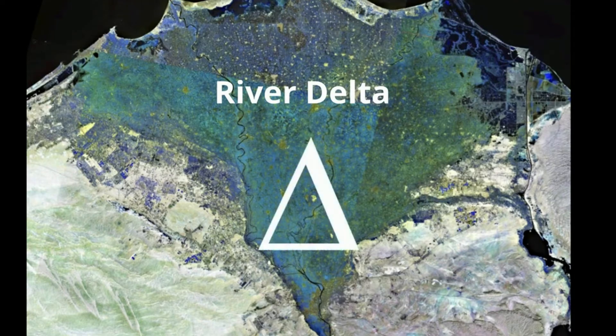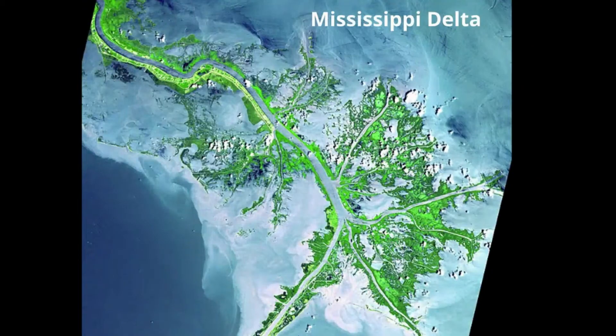However, not all deltas are triangle shaped. A bird foot delta has few, widely spaced distributaries, making it look like a bird's foot. The Mississippi River is an example.